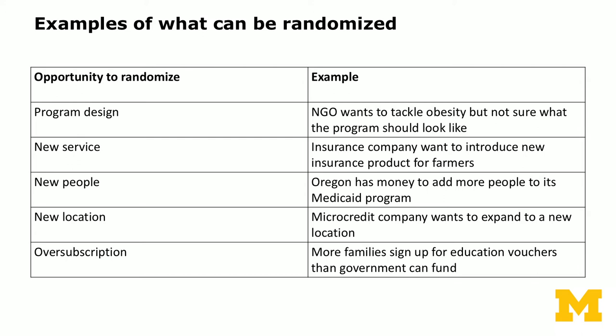Sometimes you get to have new people. For example, Oregon had money to add more people to its Medicaid program, enabling them to study the effect of having Medicaid on health outcomes. You can infer causally the effect of access to Medicaid if you design a randomized field experiment. Sometimes you get new locations — a microcredit company expanding to a new location offers opportunities to randomize as well. Another opportunity arises with oversubscription: if more families sign up for education vouchers than the government can fund, you can randomly select a subset to receive the vouchers, with the others serving as the control.